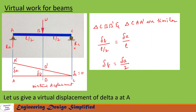To find reaction RA at A, let us give a virtual displacement of delta_A at A. The beam will assume the position C, B', A'. We get two similar triangles: C-B-B' and C-A-A'. The displacement at A is delta_A and at B is delta_B. From the similar triangles: delta_B / (L/2) = delta_A / L.